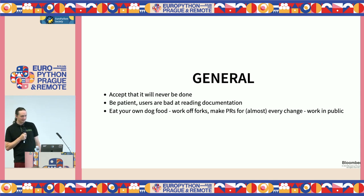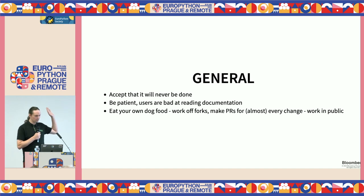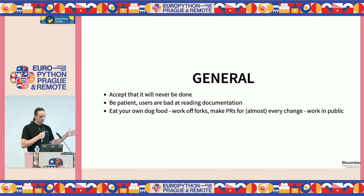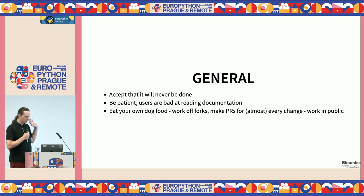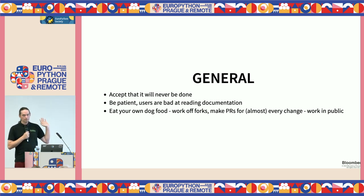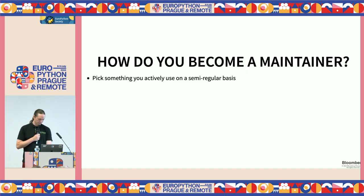As a maintainer, you should accept that this job will never be done — there's no such thing as a project being finished. Always be patient. Users are really bad at reading documentation — me included. Eat your own dog food: don't take advantage of your position. I work on forks and make PRs like everyone else, walking the same path I preach about how people should contribute. That's an easy way to see if your contribution process is working well.